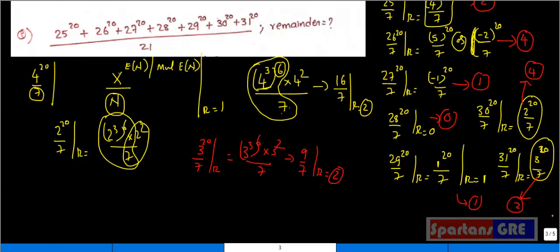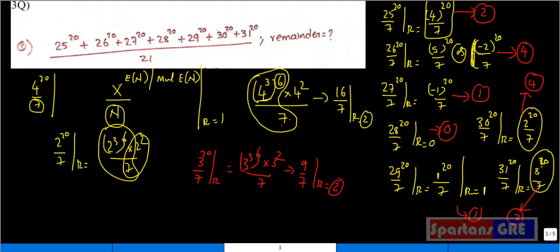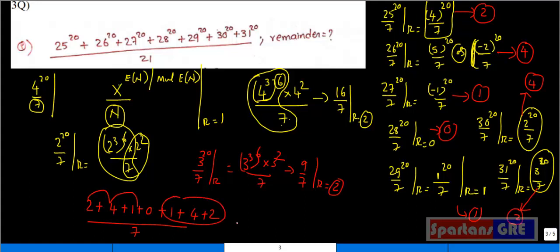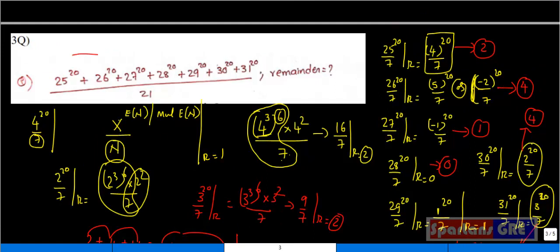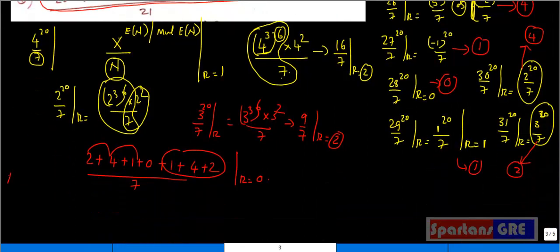Adding all remainders for division by 7: 2 plus 4 plus 1 plus 0 plus 1 plus 4 plus 2, divided by 7 equals 14 divided by 7. The final remainder when dividing by 7 is 0. So this whole number, when divided by 7, gives remainder 0.